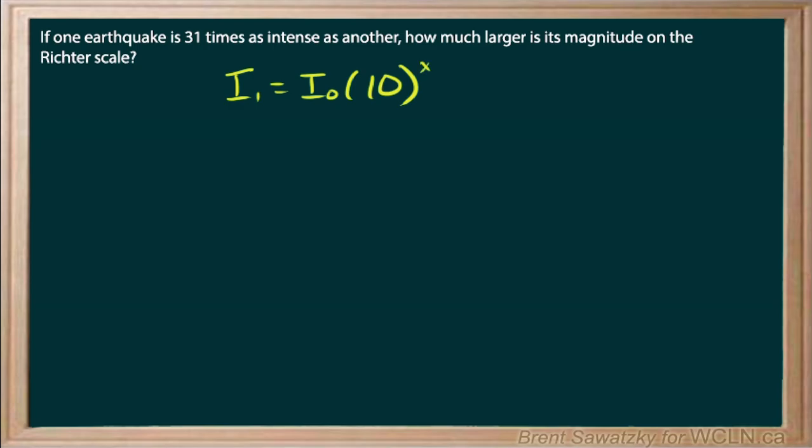So let's just call it an X. And the second earthquake, similar, base intensity, 10 to the, and again, we don't know what this one would be on the Richter scale as well. So that's Y.